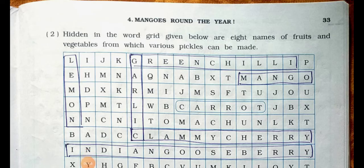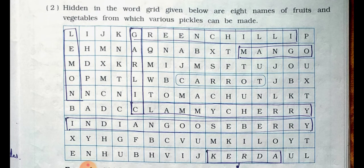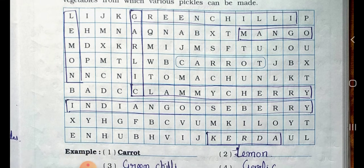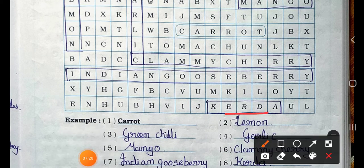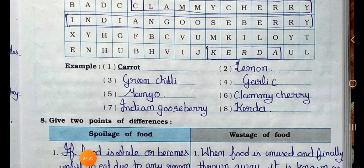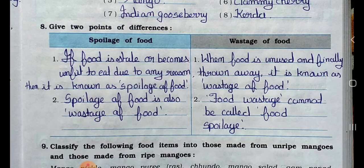Part 2: Hidden in the word grid below are eight names of fruits and vegetables from which various pickles can be made. The names are: 1. Carrot, 2. Lemon, 3. Green chili, 4. Garlic, 5. Mango, 6. Clammy cherry (gunda), 7. Indian gooseberry, and 8. Curda.